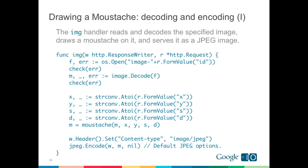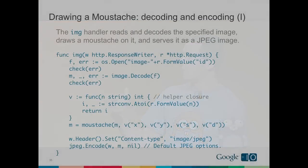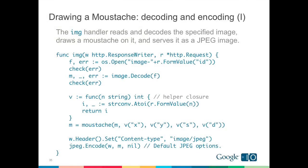The image handler opens the relevant image file, decodes it, pulls the X, Y, S, and D parameters from the query request, uses the mustache function to draw on the image, and serves the resulting image as an encoded JPEG. We can clean up the repetitive query parameter parsing using a helper closure V that takes a string and returns an integer, handling the string-to-int conversion needed because Go is statically typed. When we call mustache, we pass V(x), V(y), et cetera.